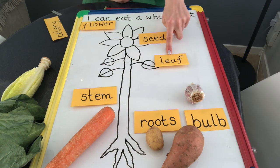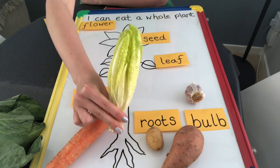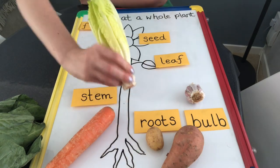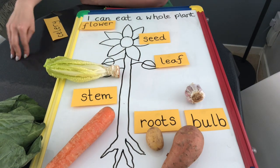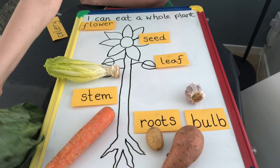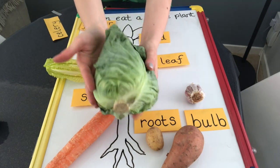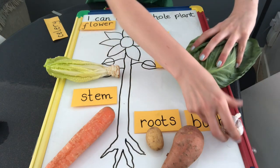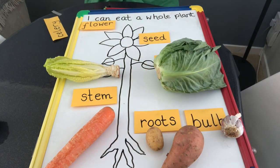Next let's have a look for some leaves. Here we have some romaine lettuce leaves, bright green and beautiful, so let's pop them on our plant. Some lovely leaves that we eat, and also a sweetheart cabbage — I'll squeeze him in there and he can be the other leaf on our plant.